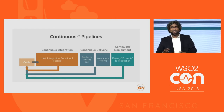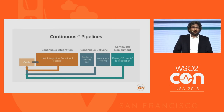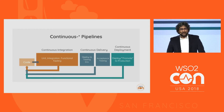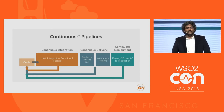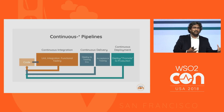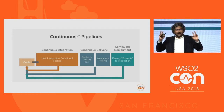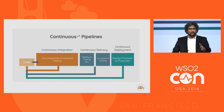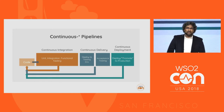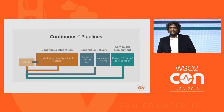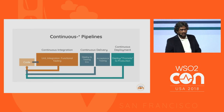You might have multiple stages in your pipelines — for example, it could be test, staging, pre-production, UAT, whatever you call it. That's the continuous delivery space. But the last piece is called continuous deployment — that's where you collect all the changes you have developed and deploy or promote them into production. So when you say continuous-star pipelines, that involves continuous integration, continuous delivery, and continuous deployment. During this talk, we will touch each of these sections.